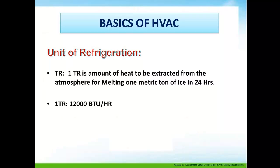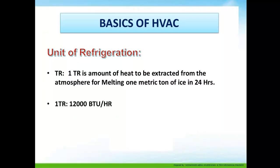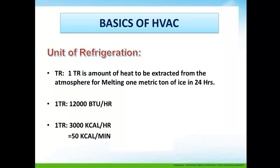Unit of refrigeration: 1 TR (ton of refrigeration) is the amount of heat to be extracted from the atmosphere for melting 1 metric ton of ice in 24 hours. 1 TR is also equal to 12,000 BTU per hour, 3,000 kilocalories per hour, or 50 kilocalories per minute.